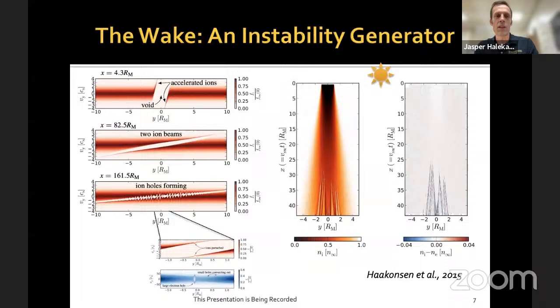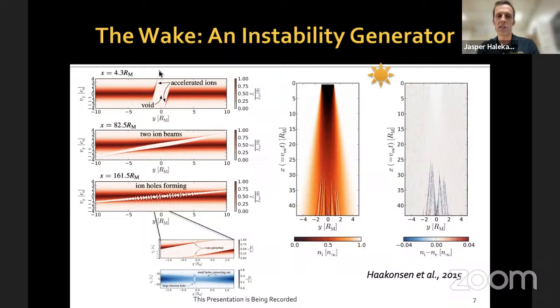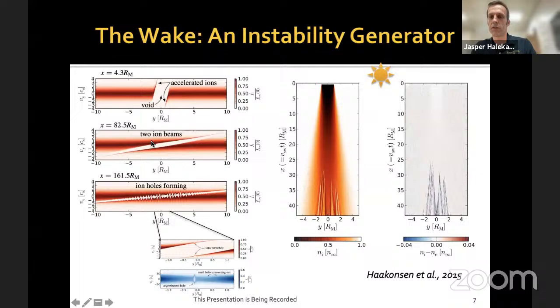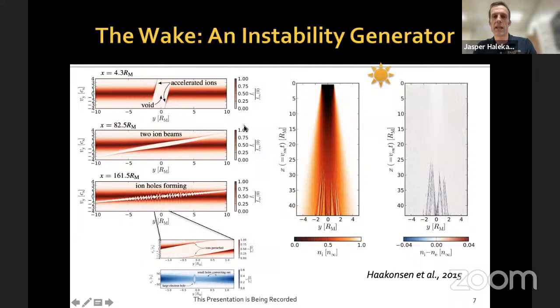Ion-scale instabilities arise in the wake. The ion acceleration along the field creates energy gain on one side and energy loss on the other, as seen in phase-space diagrams. What gets really interesting is when the two refilling ion beams interpenetrate. When you get far enough down the wake—some tens of lunar radii—those ion beams meet in the middle, and you get essentially a two-stream instability. You can get ion holes and all kinds of interesting electrostatic instabilities forming as a result. This is seen in both simulations and data.